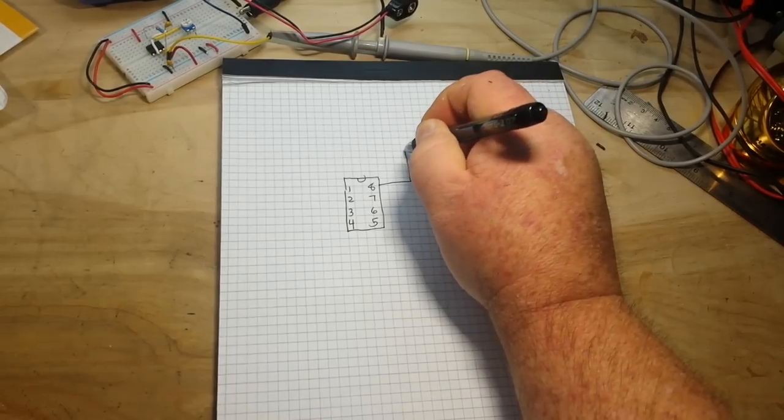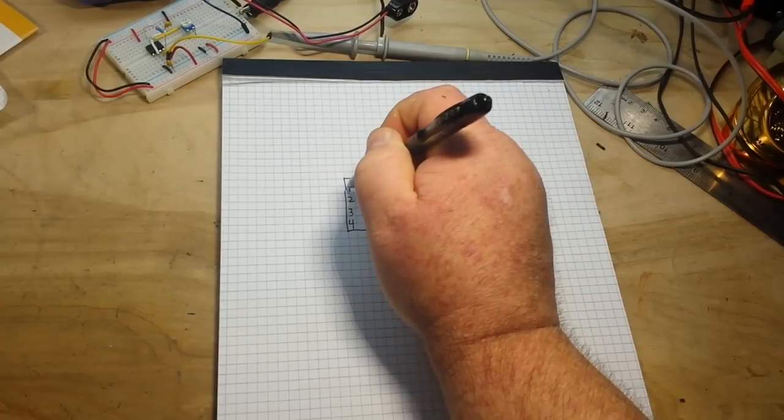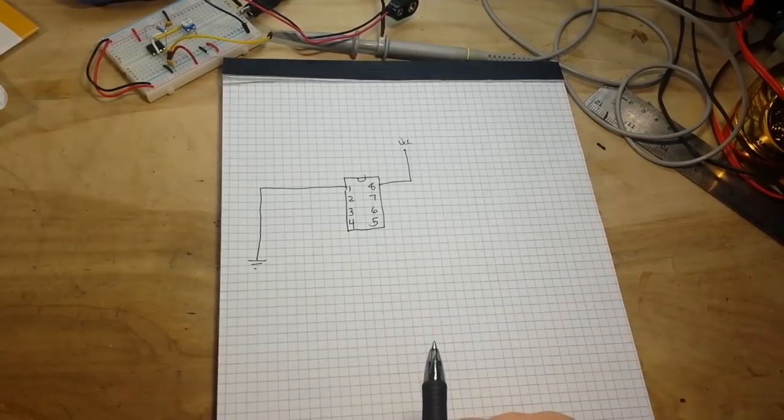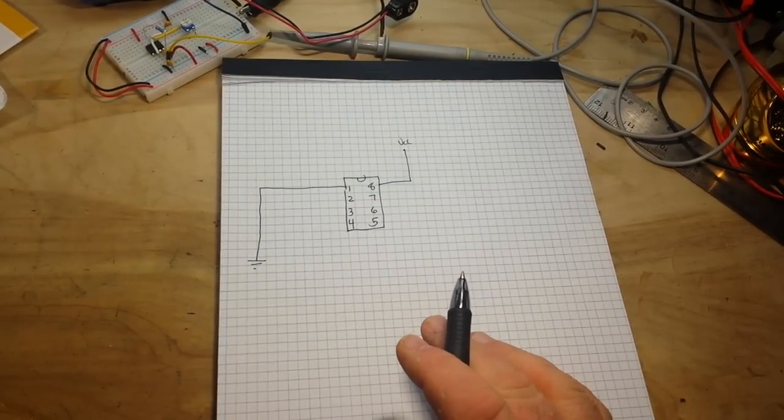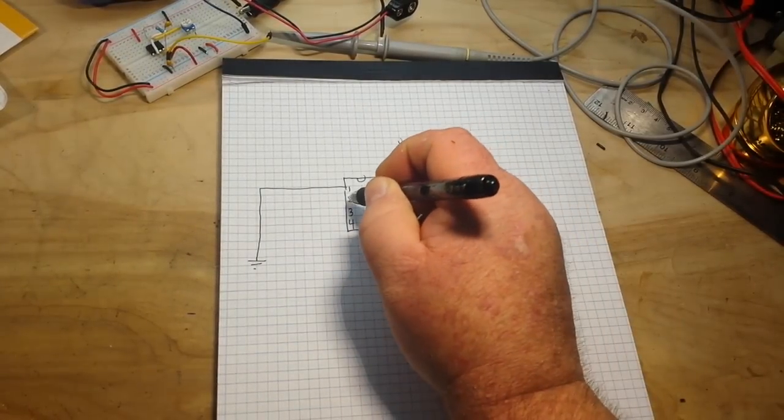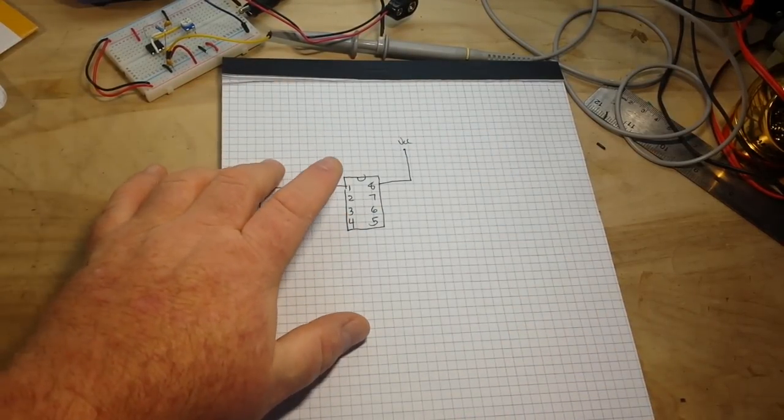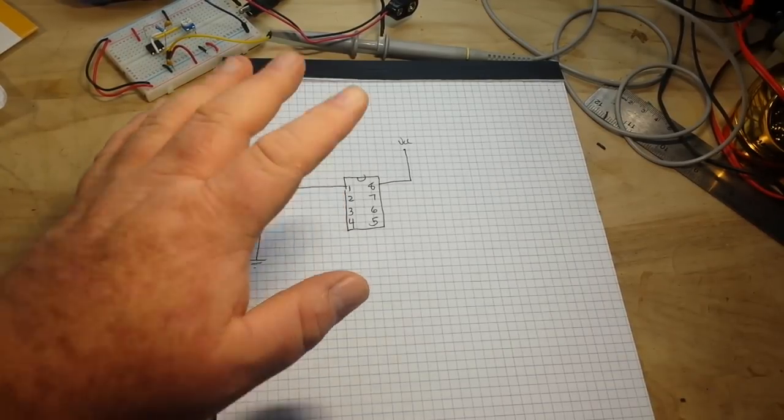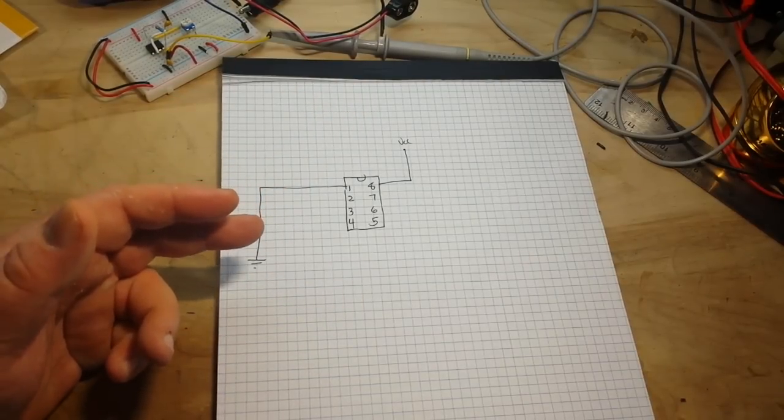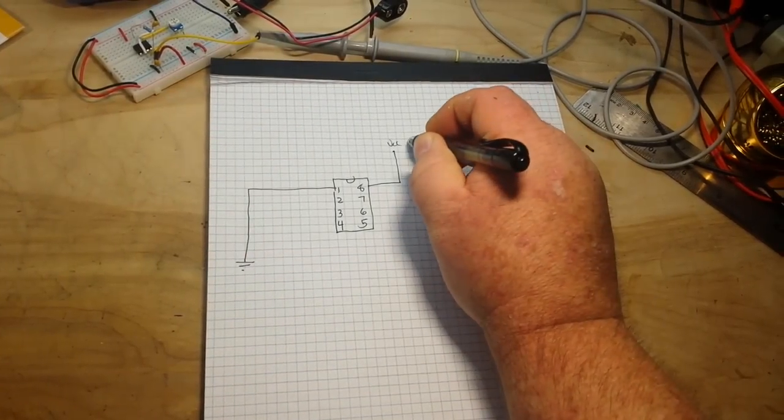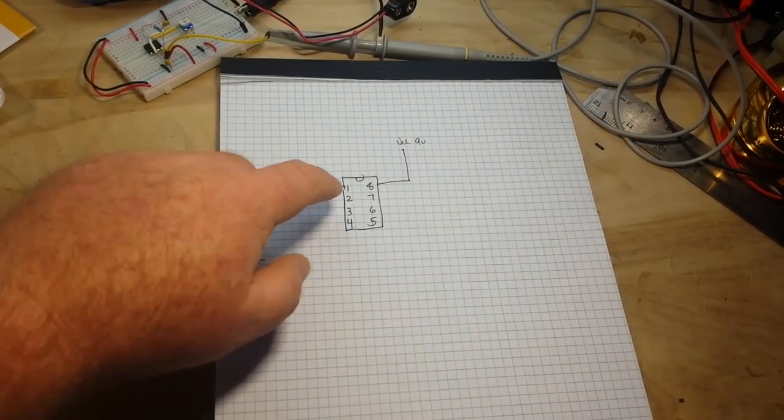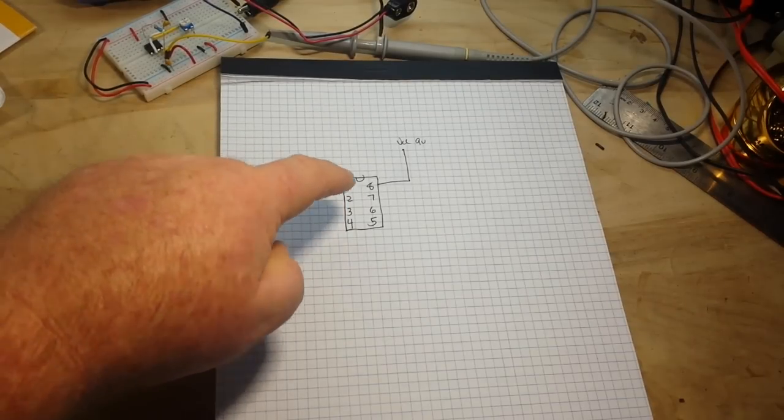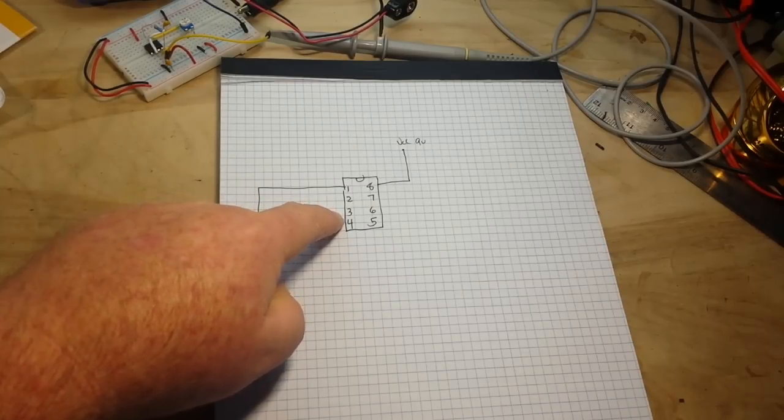So pin 8 is our VCC, obviously. Pin 1 is our ground. So now we have our basic power put to it. Let's go over what the pins are. I guess we should start with that. Pin 2 is our trigger pin. And it's active low. So when the voltage drops to below one-third of the supply voltage, which in our case is going to be 9 volts, then pin 2 is going to go active. Active low. And when it goes active low, pin 3, which is our output, is going to go active high.